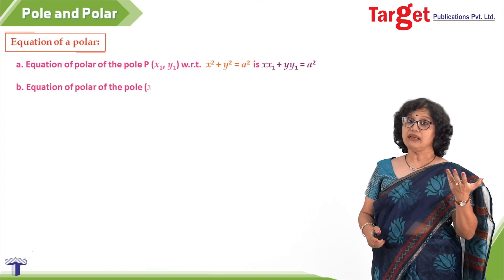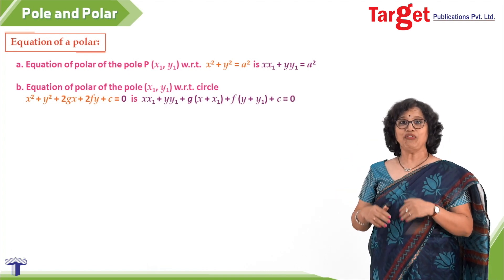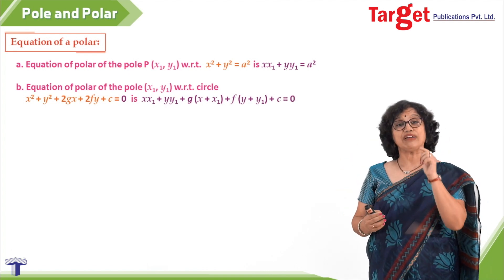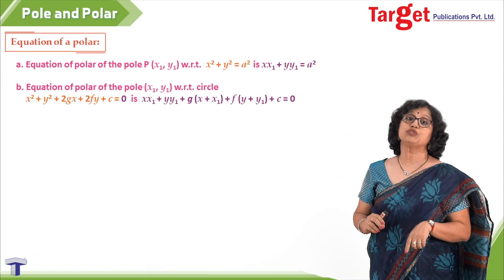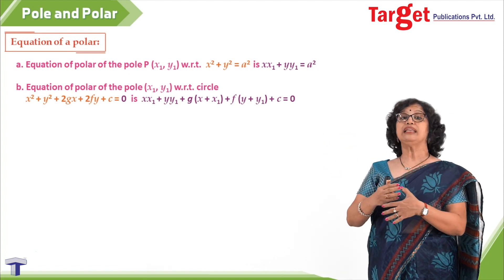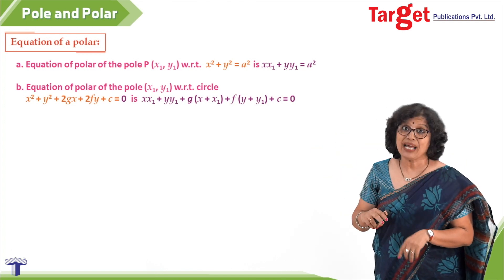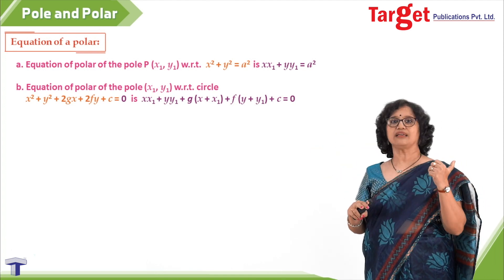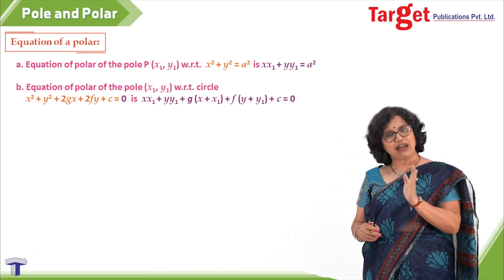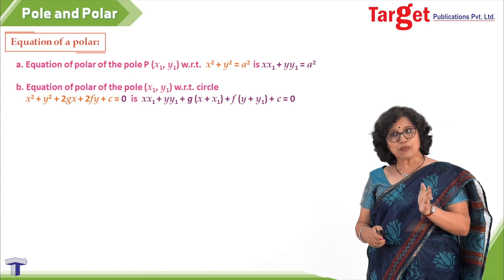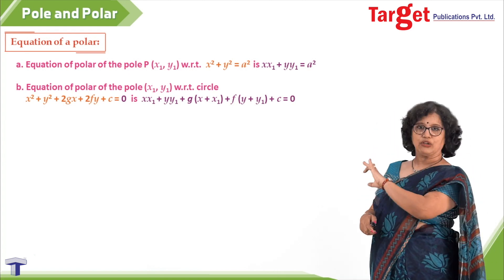Again, the equation of the circle is not necessarily always x² + y² = a². We will have to make provision for the equation of the circle. If it is x² + y² + 2gx + 2fy + c = 0, then what would be the equation of the polar? The equation of the polar would be xx₁ + yy₁ + g(x + x₁) + f(y + y₁) + c = 0.